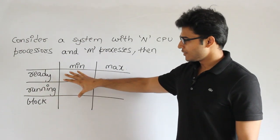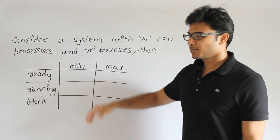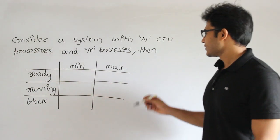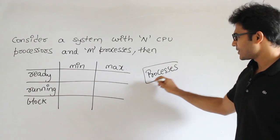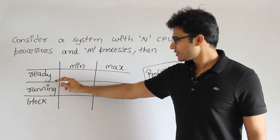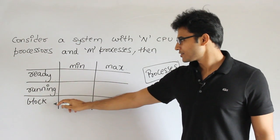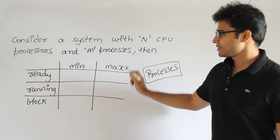The question is: how many processes can be present in ready state, running state, and blocked state at minimum and maximum? Let's analyze each state.